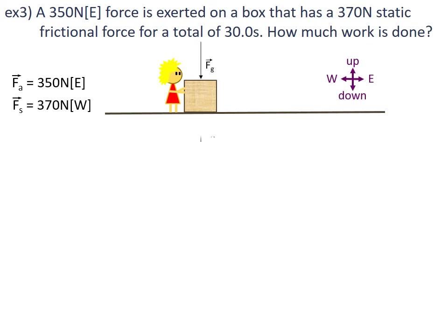Gravity pushes down, normal force pushes up — equal and opposite so they cancel out. The applied force is 350 newtons east and the static frictional force is 370 newtons west. It appears as though this person did not push hard enough to break the static force of friction, so the box did not move.